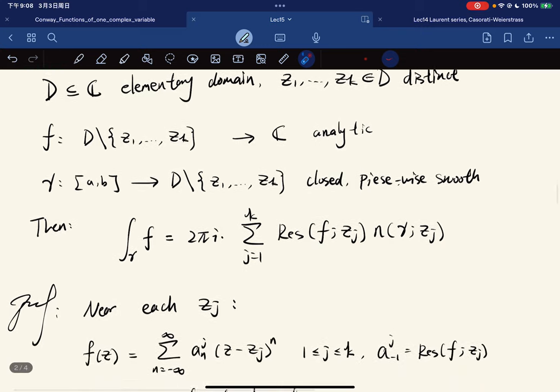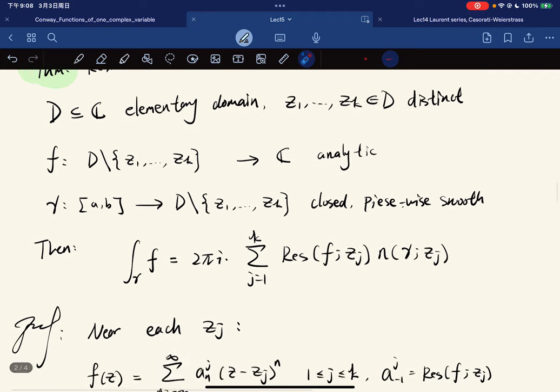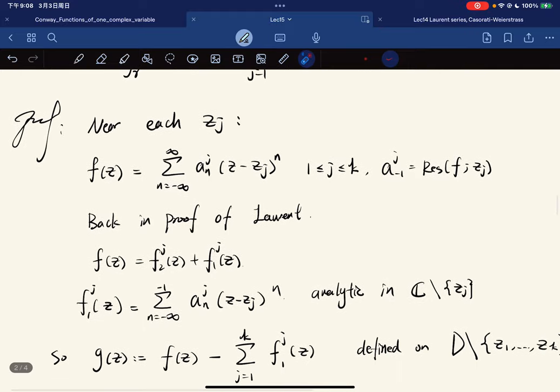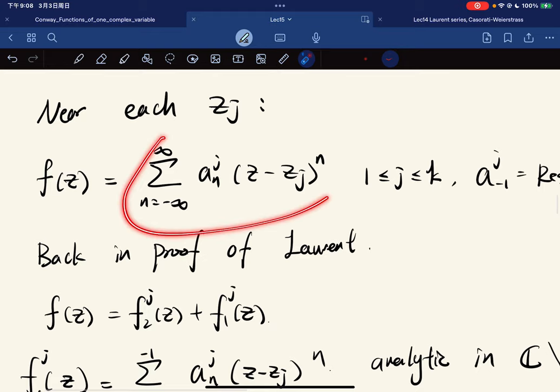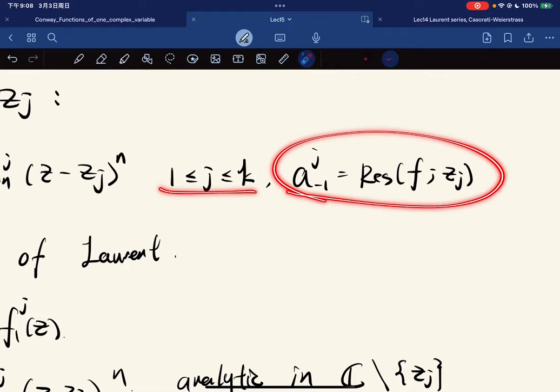So the proof is basically an application of Laurent series development. Because near each zj, fz can have a power series expansion, right? Near each zj, fz can be expanded as a Laurent series. And for each zj, we have the residue for zj.